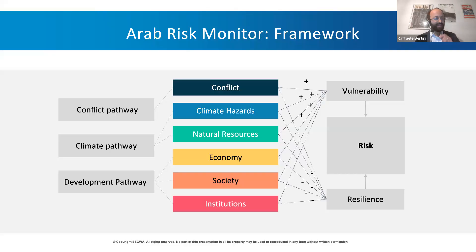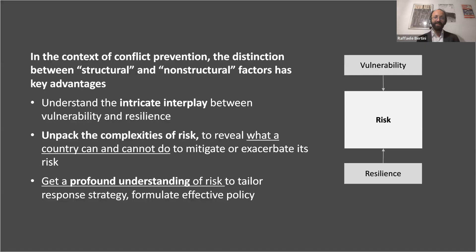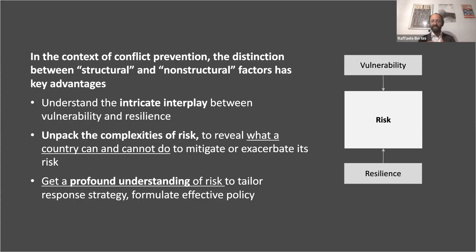At the extreme right of this slide, you can also see that these pathways and domains are divided into two main dimensions: vulnerability and resilience. We define risk as a function of vulnerability and resilience. This is particularly relevant in the context of conflict prevention as a distinction between structural and non-structural, policy-driven factors. It looks at the interplay and mechanisms between vulnerability and resilience, and helps unpack the complexity of risk — revealing what a country can do and what it cannot do to mitigate or exacerbate the risk of conflict. This allows a profound understanding of risk to tailor response strategies and formulate effective policy.